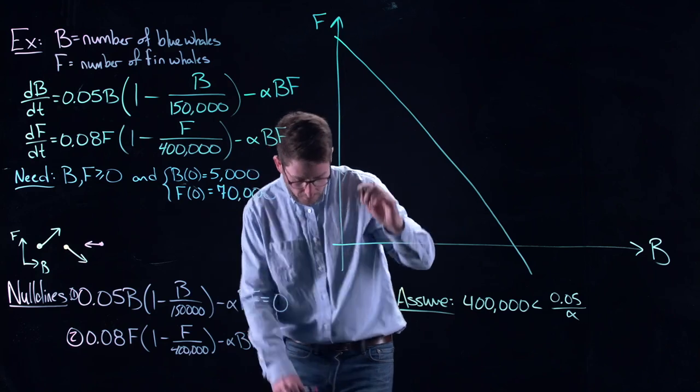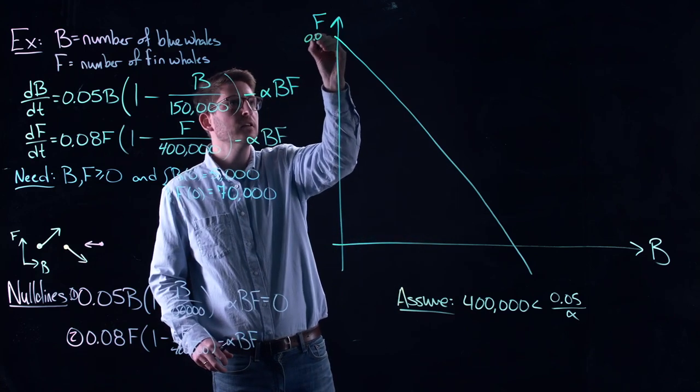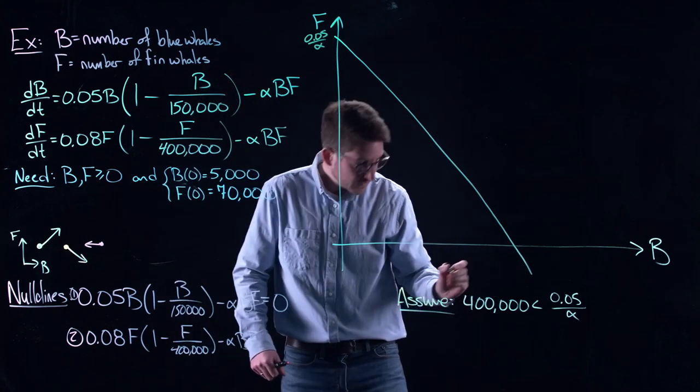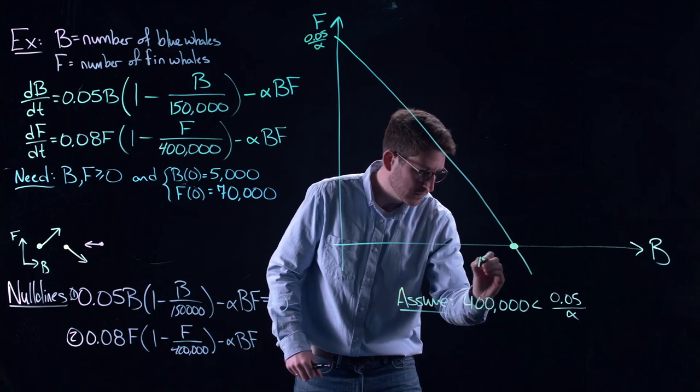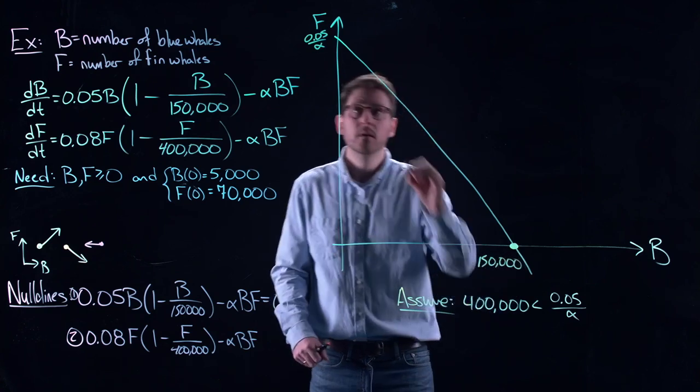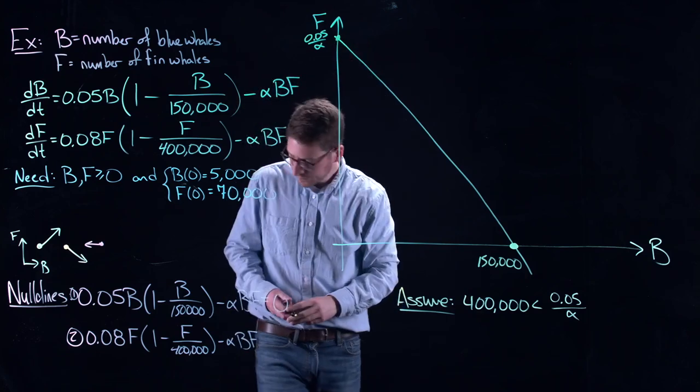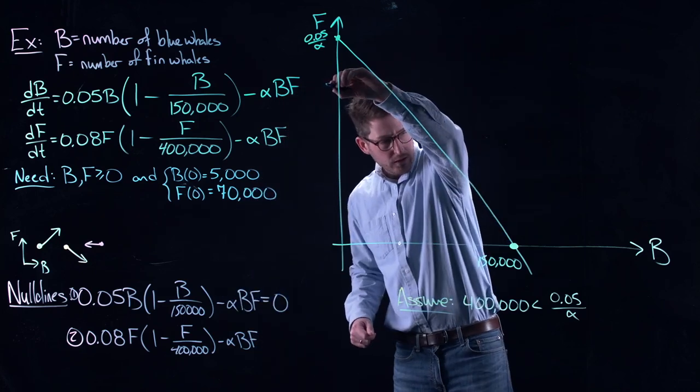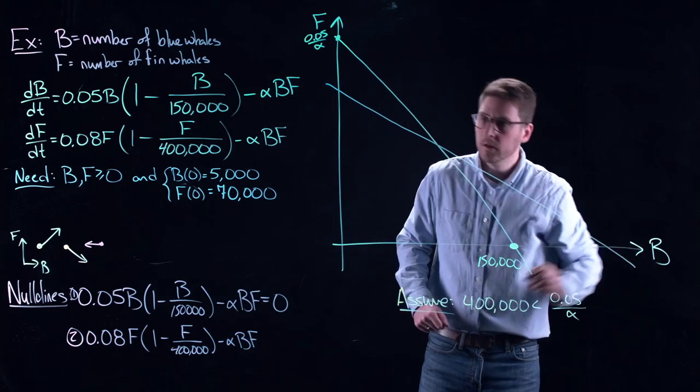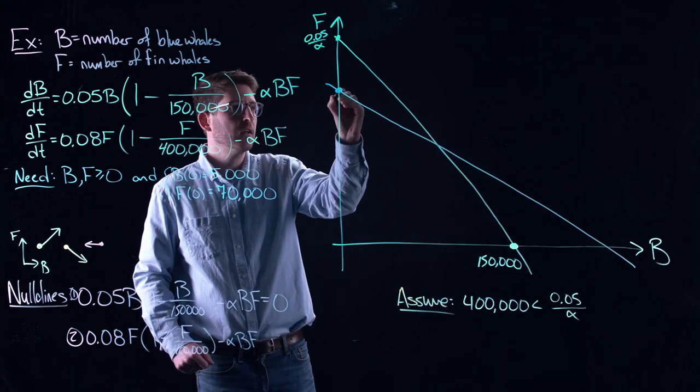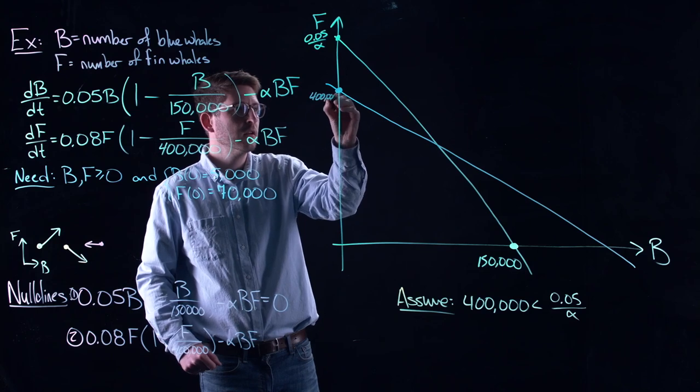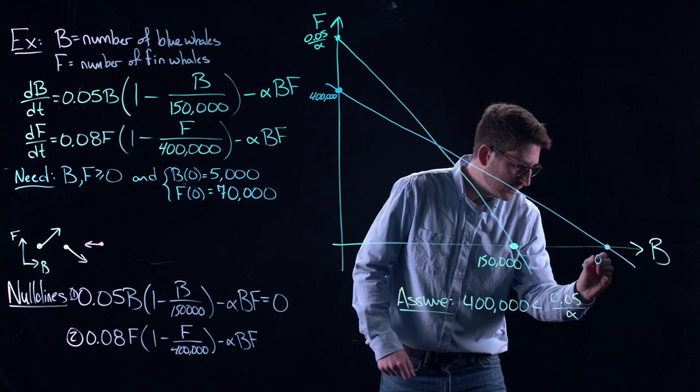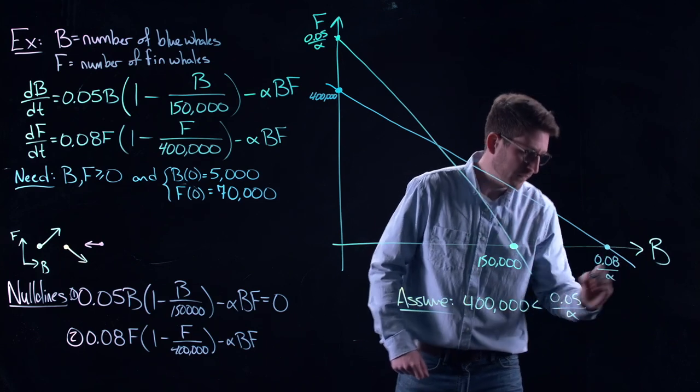So let me sketch out the other null line before we start putting vectors on this thing. The other null line is 0.08F, 1 minus F over 400,000 minus alpha BF. So I forgot to put some values on here. In this case, this is 0.05 over alpha. And this case right here, this point is 150,000. So let's indicate those. And then, let's draw the other one on here. The other one is going to look like this. This is my 400,000. And this is my 0.08 over alpha.